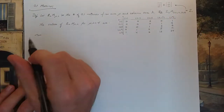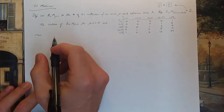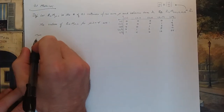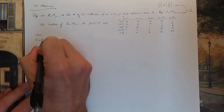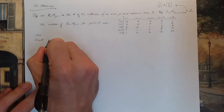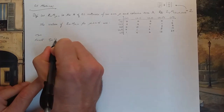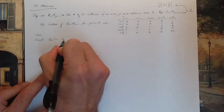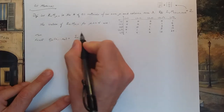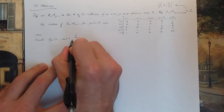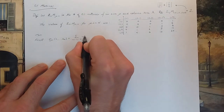Now I'm going to relate the number of 0,1 matrices to the elementary symmetric polynomials. Recall that for any integer partition μ, E_μ is a polynomial in a number of variables defined to be the sum over all row-increasing tableaux t of the weight of t.